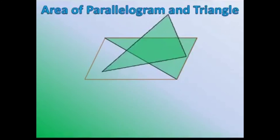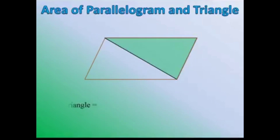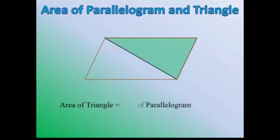As you can see, both triangles are the same — they are superimposing each other. The area of a parallelogram is base into height, and since we have got two equal triangles from a parallelogram, the area of a triangle is equal to half of the area of the parallelogram. So we can say that it is half into base into height.